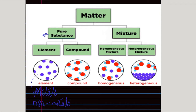Elements are classified into metals and non-metals, whereas compounds are classified into molecules and ions.